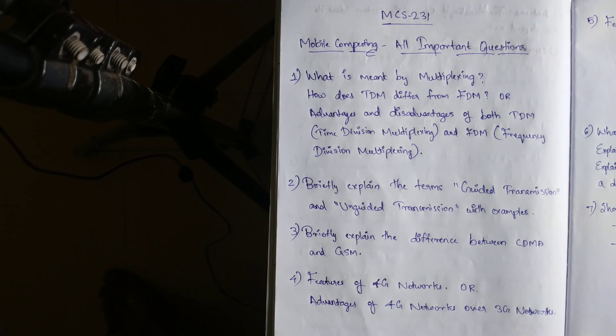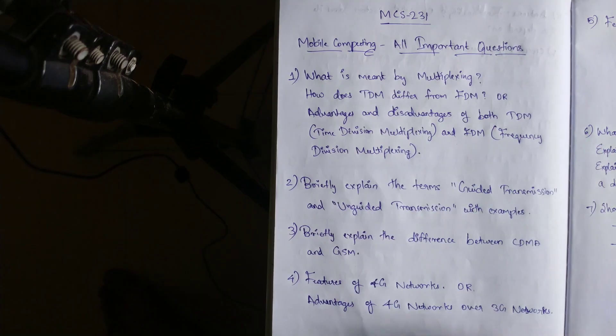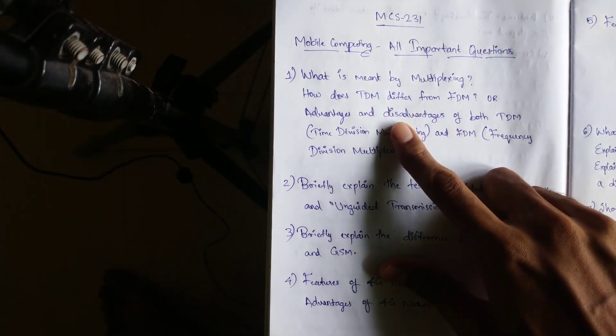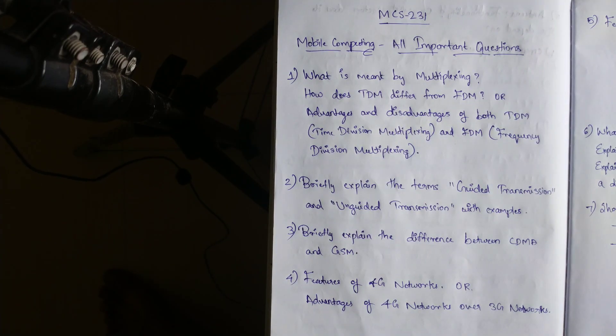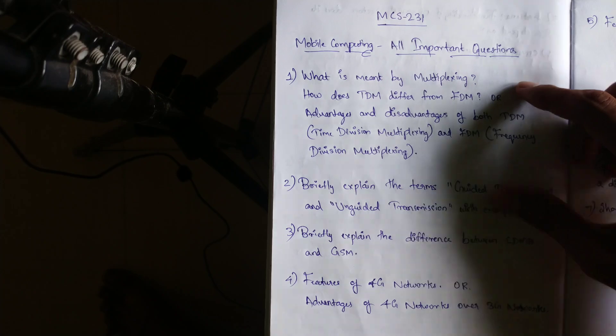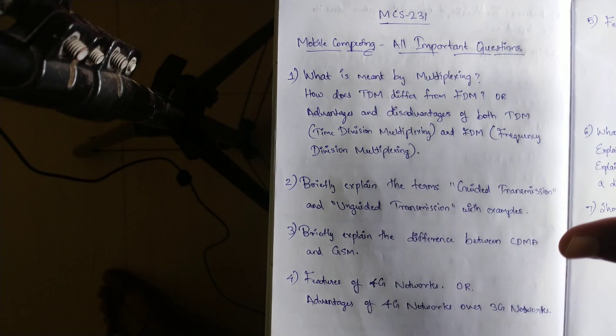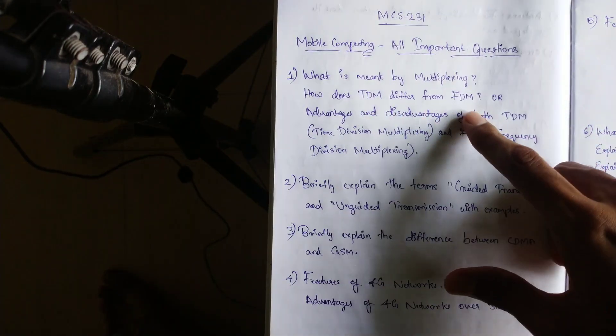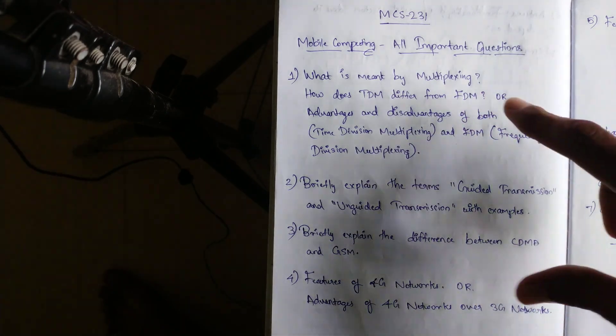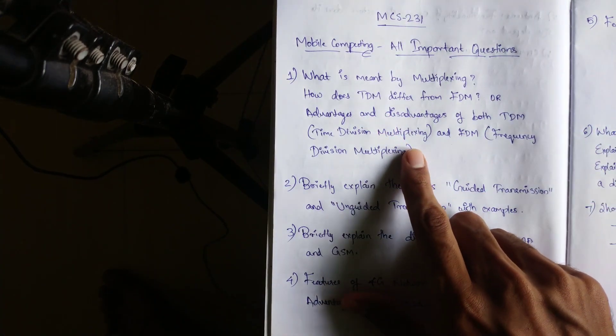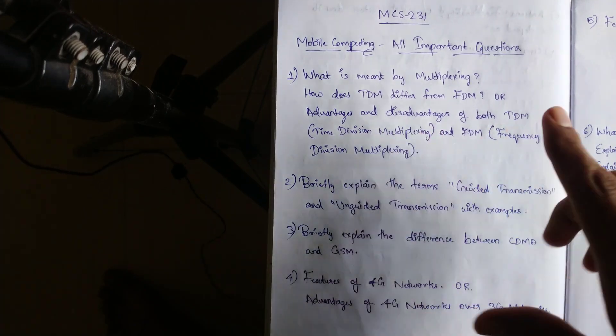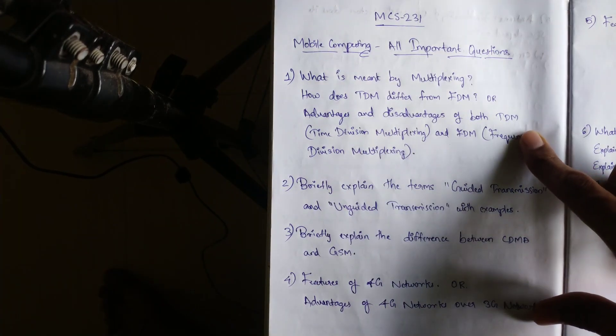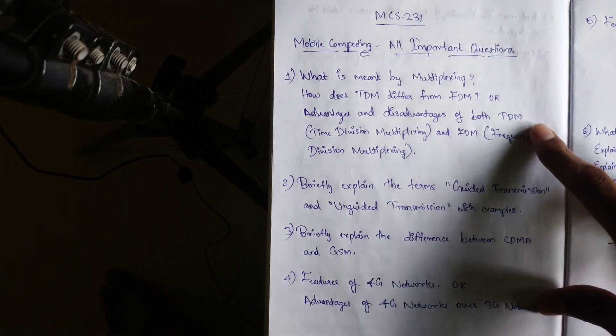First question that is frequently asked in the exams is what is meant by multiplexing and how does TDM, time division multiplexing, differ from frequency division multiplexing? This question can be asked in the same way or it can be asked only for the TDM or only for the FDM. So you can study both time division multiplexing and frequency division multiplexing, its advantages, disadvantages and its applications also. It's a short question and it will be asked for 10 marks in the first section.